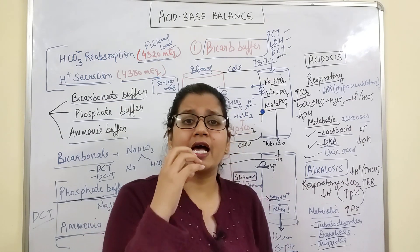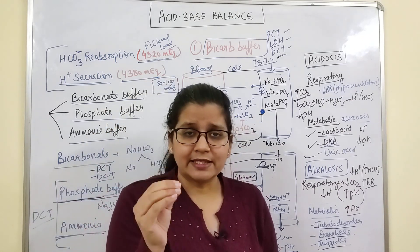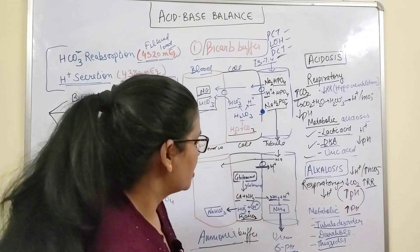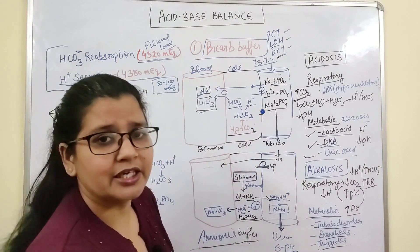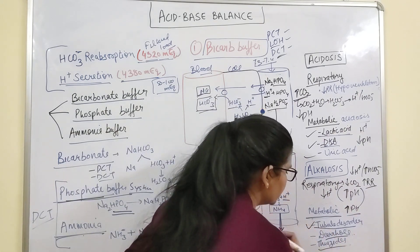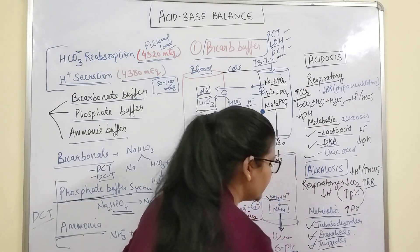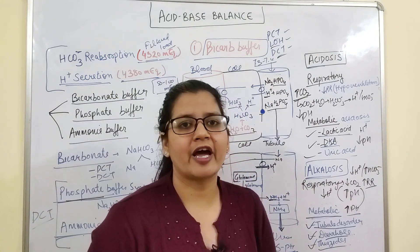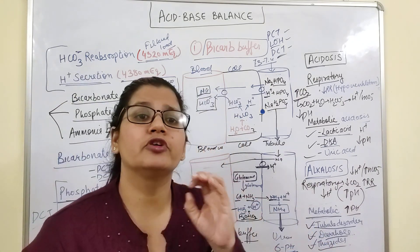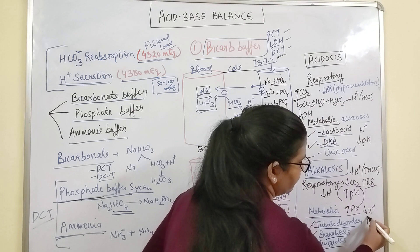Metabolic alkalosis occurs when H+ is excreted in large amounts from the body rather than accumulating, causing HCO3- concentration to increase. Examples include tubular disorders, gastrointestinal disorders like diarrhea leading to H+ excretion, and thiazide diuretics causing H+ excretion. In all these cases, less H+ means higher pH — that is metabolic alkalosis.